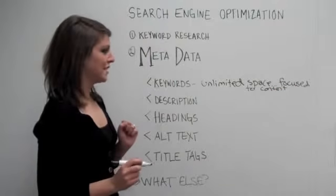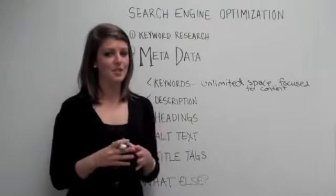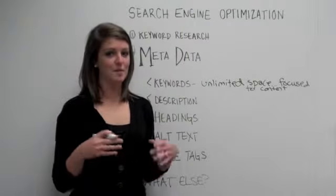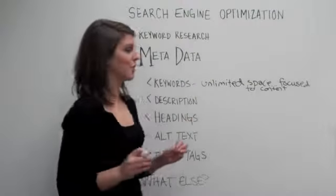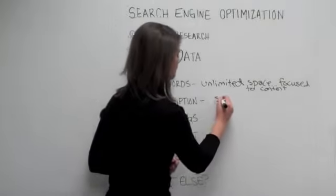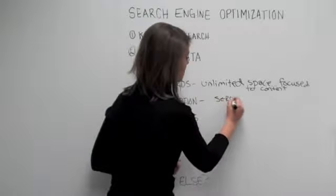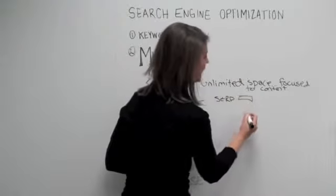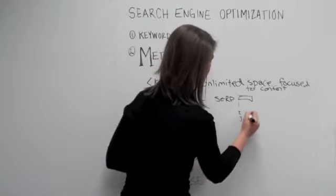Next is the description. The description is what will actually show up in your search results snippet, as Google calls it. So the description is your SERP result. You've got the search right here, and you've got a listing - one, two, three listing. This is your snippet.